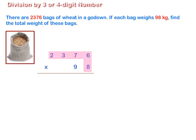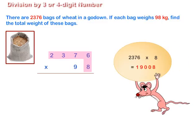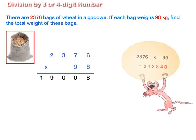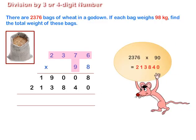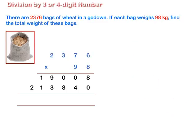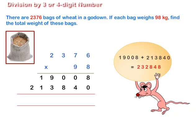Multiply 2376 by 98 to find the total weight of bags. First, multiply 2376 by 8. Then multiply 2376 by 90. Add both the products. We get 232848.